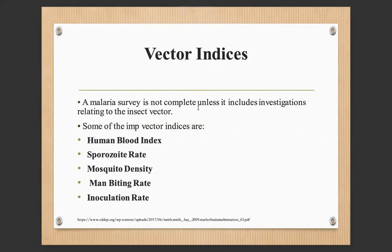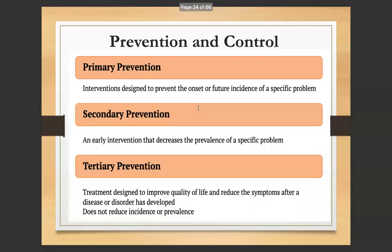Vector indices: A malaria survey is not complete unless it includes investigations relating to the insect vector. Important vector indices include the human blood index, sporozoite rate, mosquito density, man-biting rate, and inoculation rate. Prevention and control includes primary, secondary, and tertiary prevention. Primary prevention involves interventions designed to prevent the onset or future incidence of a specific problem. Secondary prevention includes early intervention that decreases the prevalence of a specific problem. Tertiary prevention is treatment designed to improve quality of life and reduce symptoms after a disease has developed, without reducing incidence or prevalence.